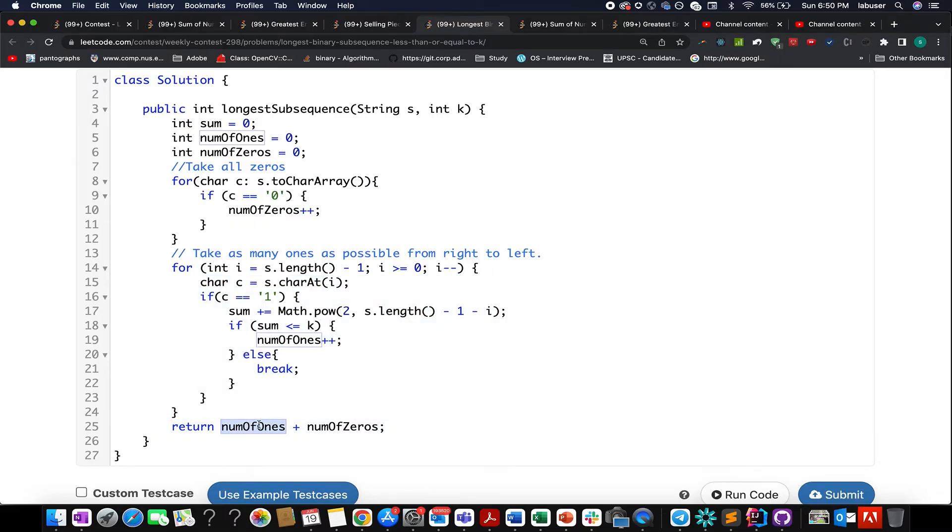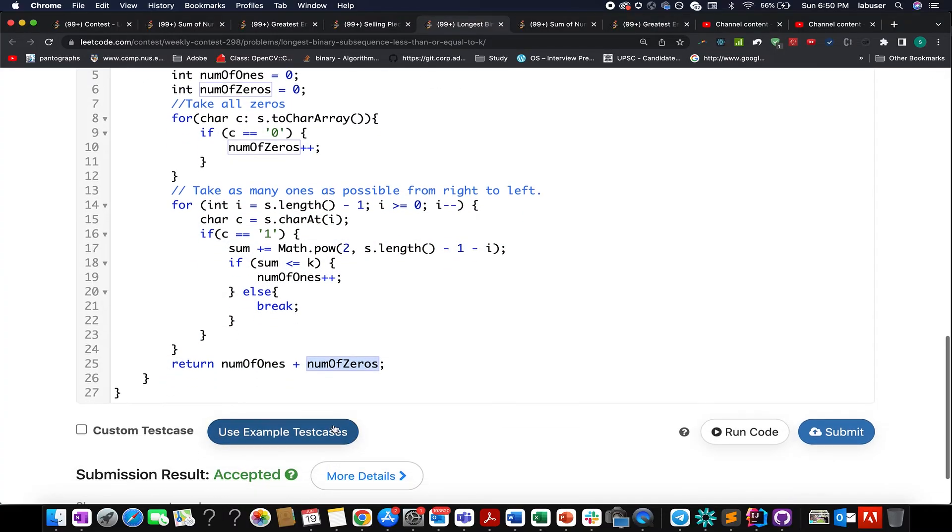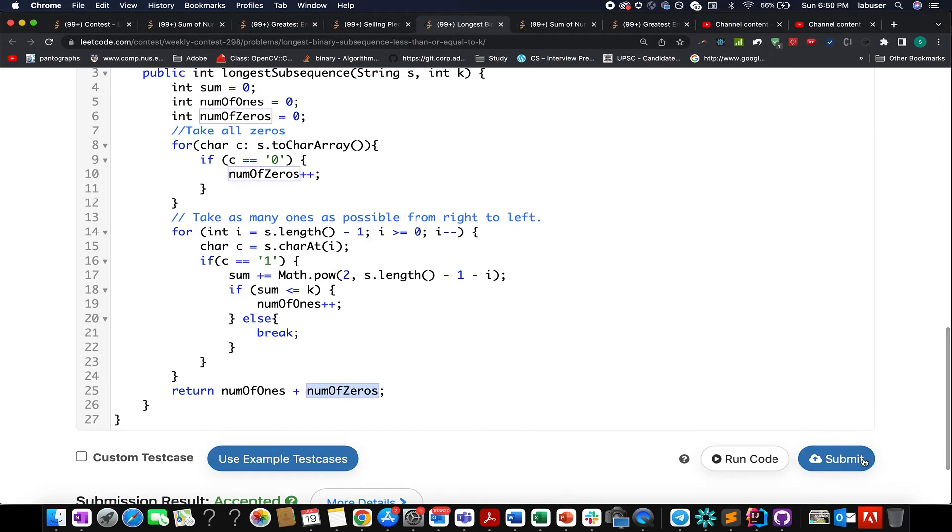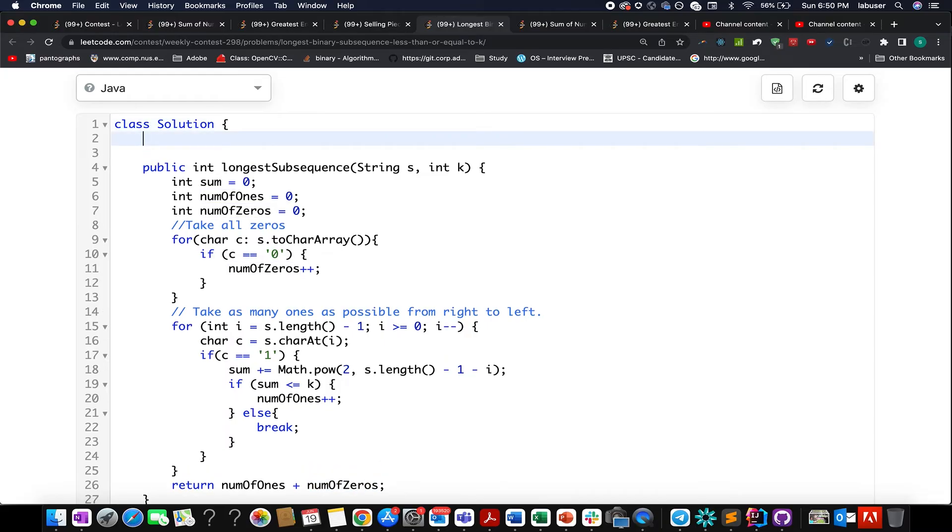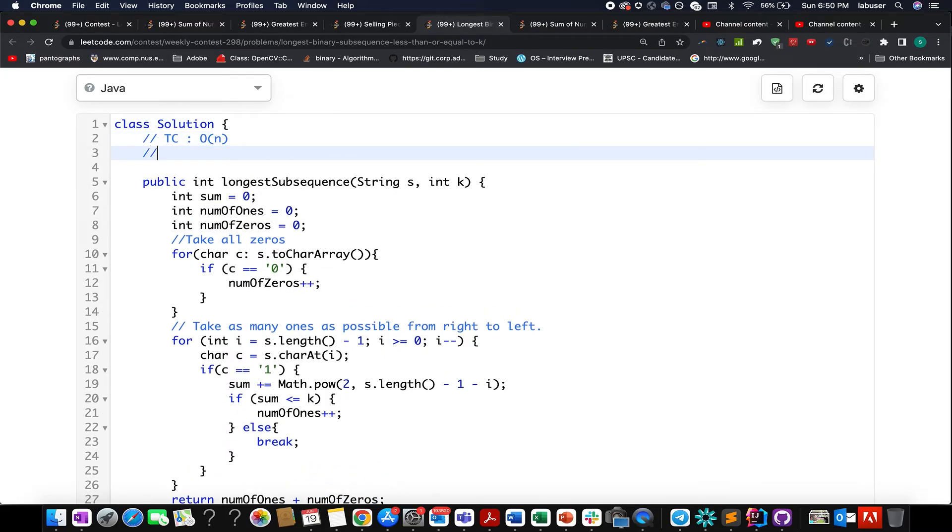Once I'm done with this, we sum the number of ones variable and number of zeros variable to identify the desired length of our answer. Let's submit it. The time complexity of this approach is O(n), the space complexity is O(1). We're not using any extra space here.